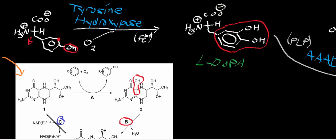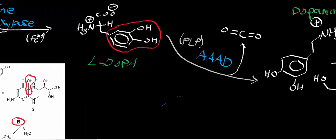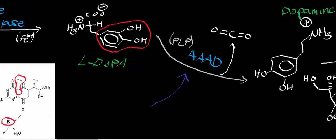This creates L-DOPA. Both tyrosine hydroxylase and aromatic amino acid decarboxylase — what AAAD stands for — are expressed in every cell that produces these neurotransmitters. Anything that produces dopamine, norepinephrine, or epinephrine expresses both of these enzymes.